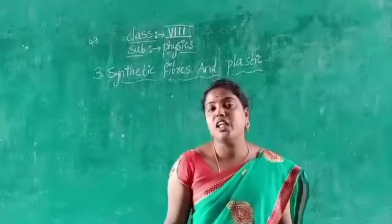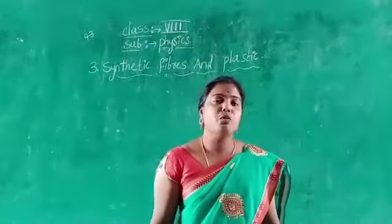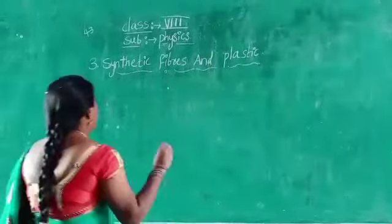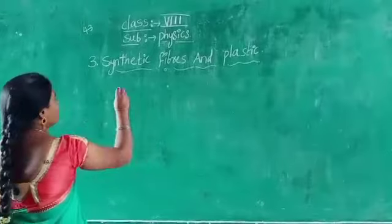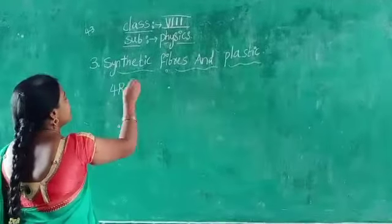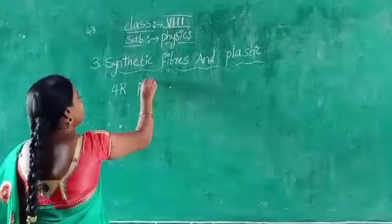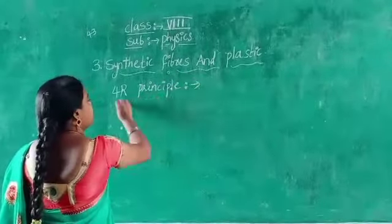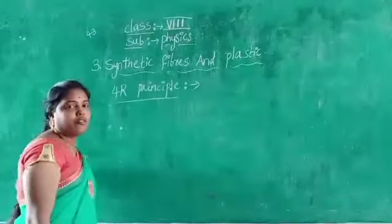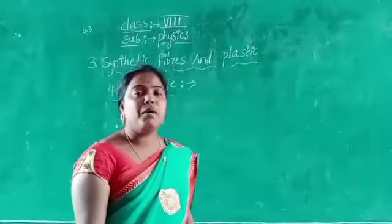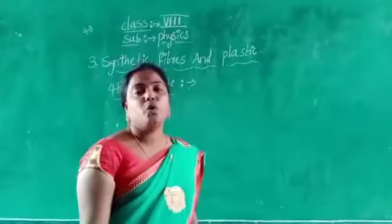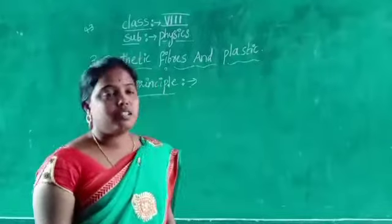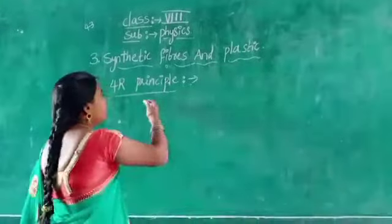By taking some steps, we can avoid the usage of plastic. How to avoid plastic usage — by using the 4R principle. This is a very important 4-mark question. That is the 4R principle. Nowadays we are using mostly plastic, but we cannot stop the total usage of plastic. But we can control the usage of plastic by following the 4R rules.